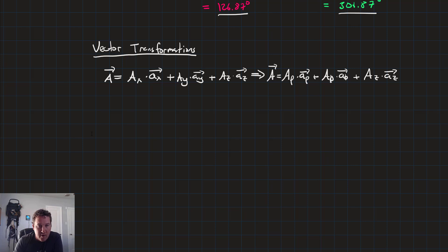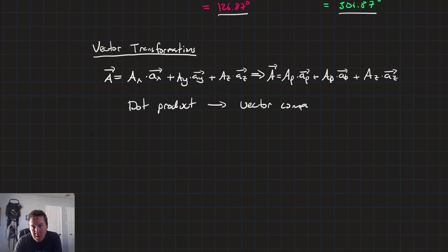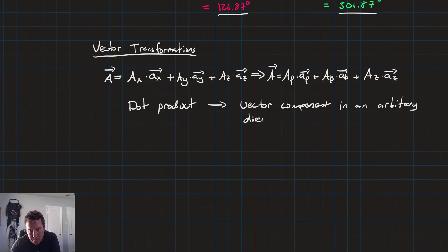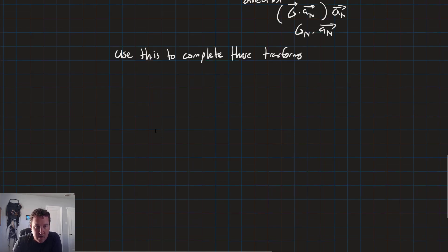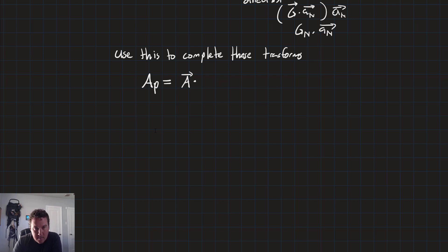Remember, the dot product gives us the vector component in an arbitrary direction. So if we want the component of A in the direction of rho, all we need to do is compute A · â_rho.